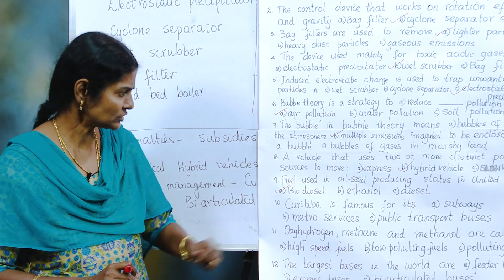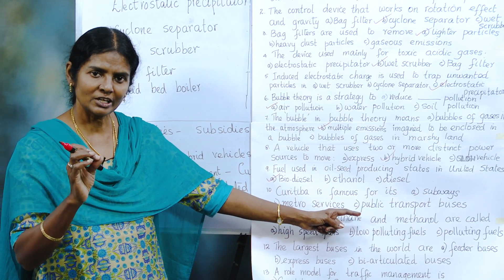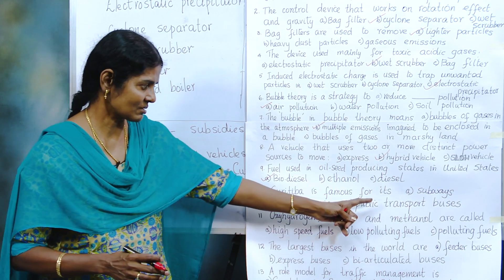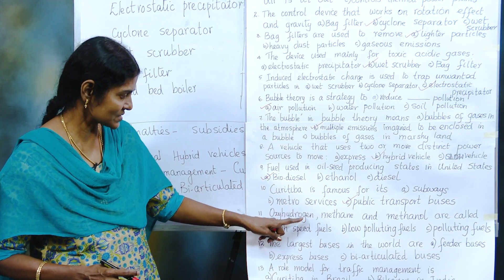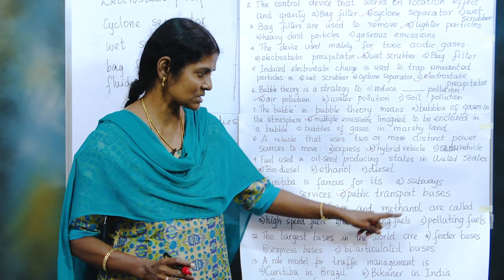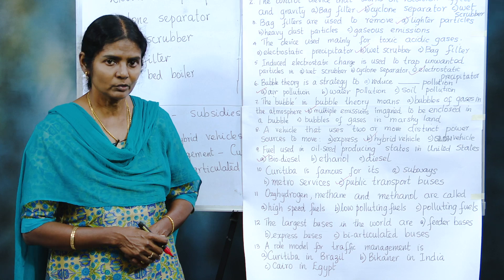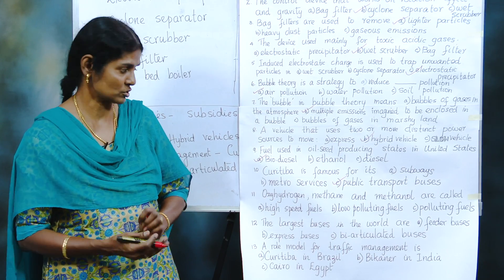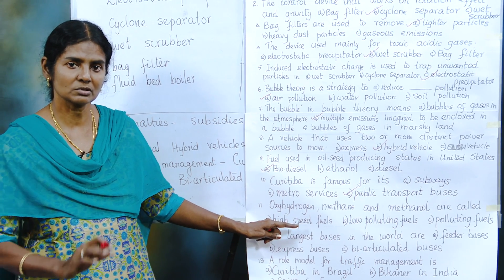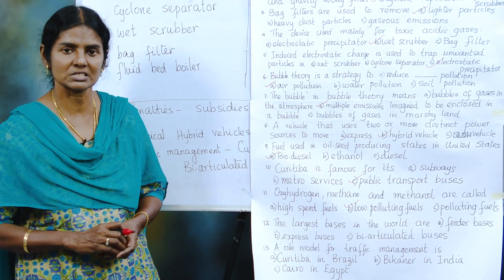Curitiba — what is it famous for? Subways, metros, or public transport buses? Curitiba is for public transport on the road, not rail or metro — so it is buses. Next: oxy-hydrogen, methane, and methanol — are they high speed fuels, low polluting fuels, or polluting fuels? When we discover alternate fuels, we want to reduce pollution, so polluting fuels is ruled out. These alternate fuels also do not have enough speed, so the correct answer is low polluting fuels.